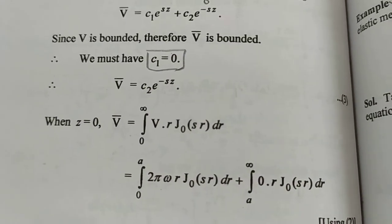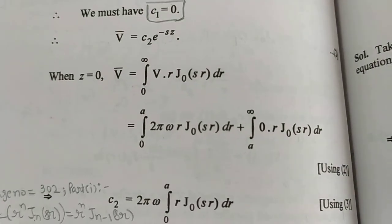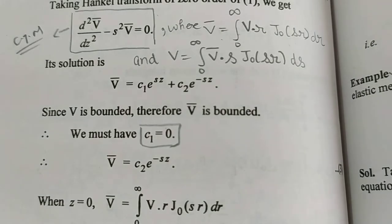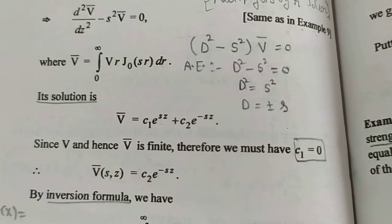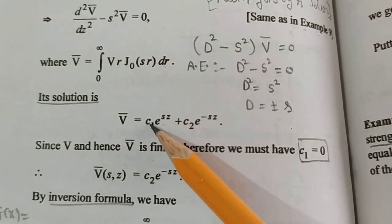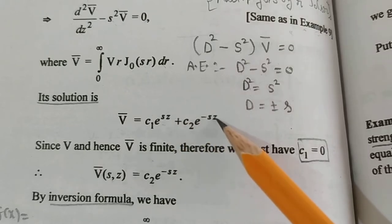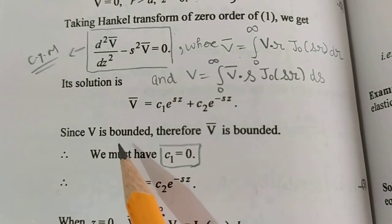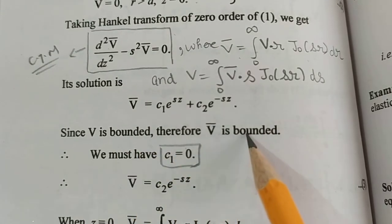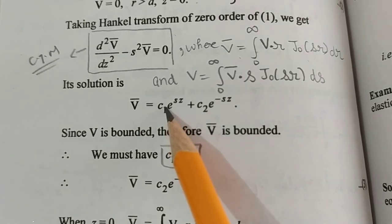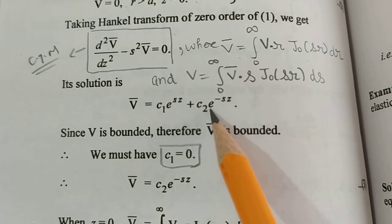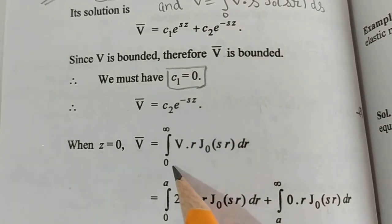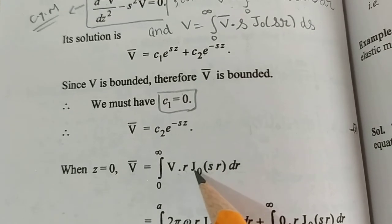Now we need to prove this here. What we are given is Z equal to 0. The solution so far is: V̄ = C₁·e^(SZ) + C₂·e^(−SZ). Now, since V is bounded, V̄ must also be bounded. If V̄ is bounded, then C₁ = 0, so our equation reduces to V̄ = C₂·e^(−SZ).